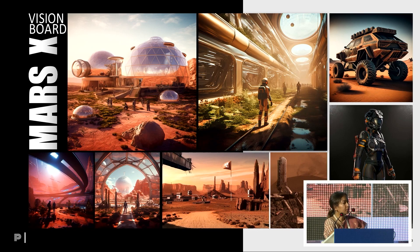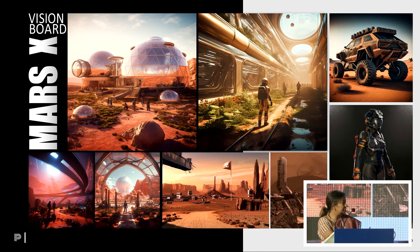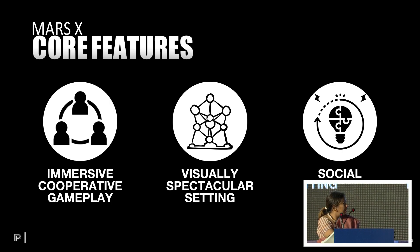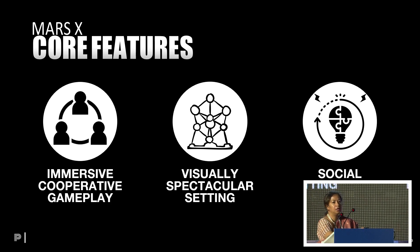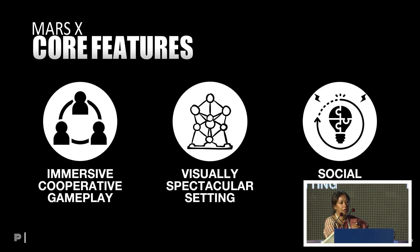We decided to create a game called Mars X, still in the works. The narrative is that the player lands on a colony on Mars and joins a team of settlers trying to build the colony. But there are shape-shifting space aliens who have infiltrated the team, and you have to discover and eliminate them before they eliminate you. The core features include immersive cooperative multiplayer gameplay where players collaborate on colony building tasks and figure out who the shape-shifters are. We want to push the visual limits of UEFN with a spectacular setting.